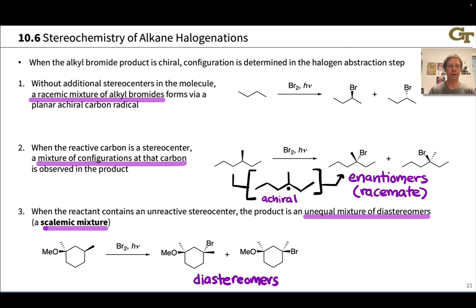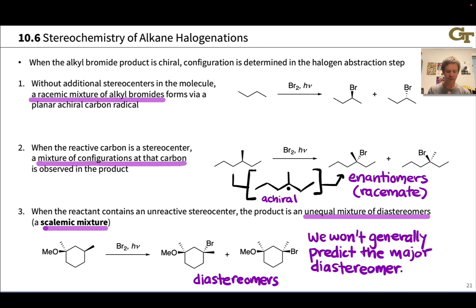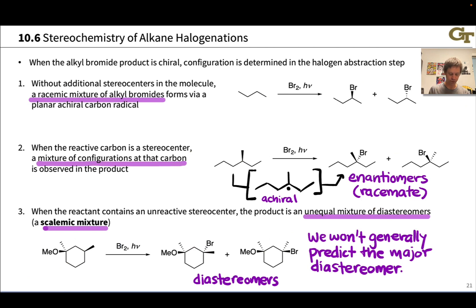The next question is which of the two diastereomers is more favored — what's the major product? We're not generally going to make this prediction in organic chemistry one, because this involves subtle considerations of sterics and other factors. The most important thing is we expect an unequal mixture of the two diastereomers, and you definitely want to be able to draw the structures of both diastereomers when predicting products of these reactions.